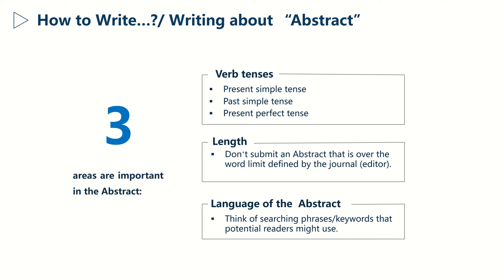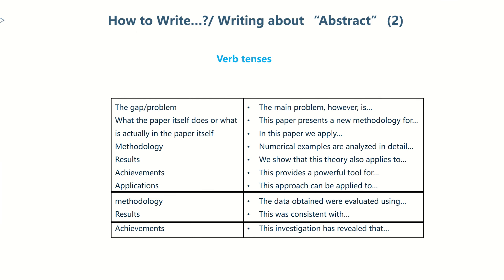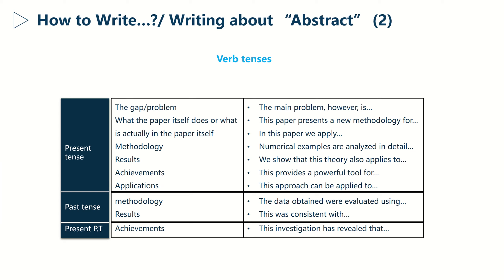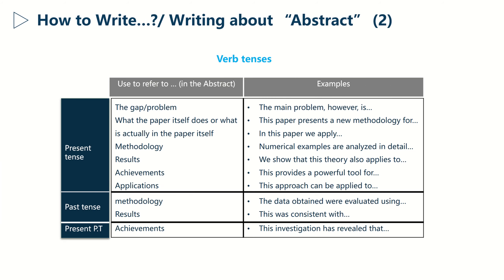Regarding the verb tenses, this table shows how the main features of the abstract are usually stated. For example, you can use the present tense to write the whole abstract — the gap, the methodology, the results, the achievements, and the applications. This is actually the easiest way to write an abstract.